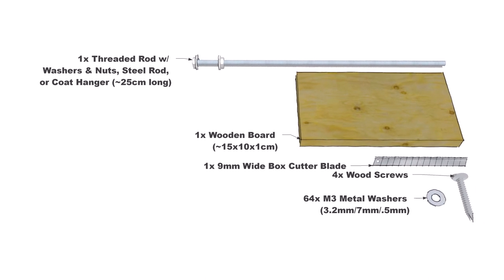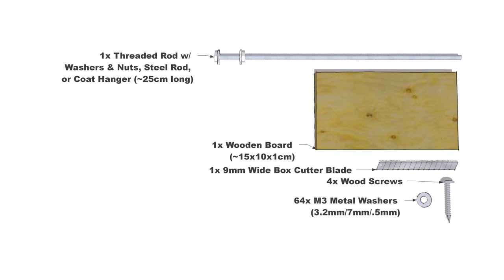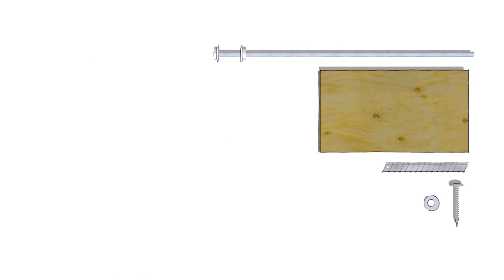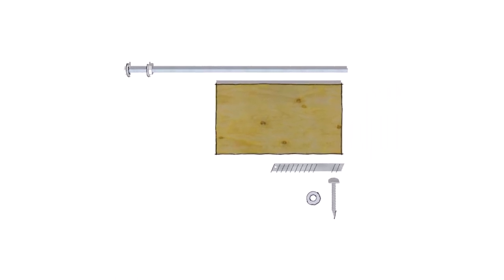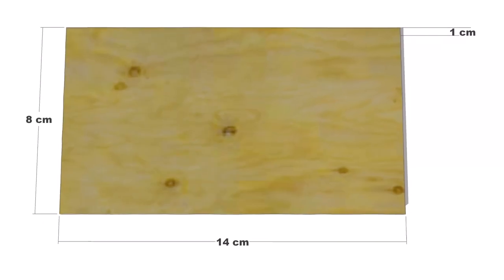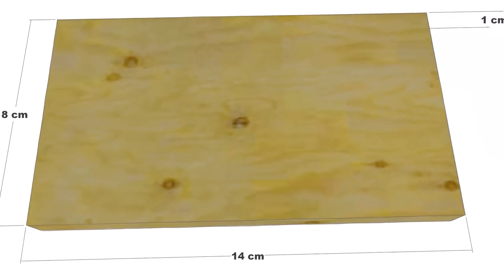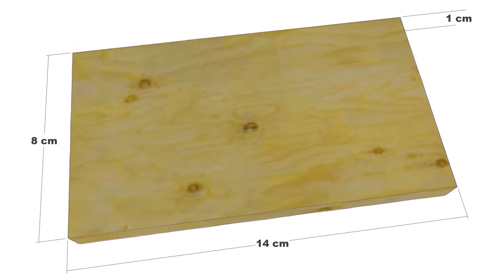A 9mm wide box cutter blade, four screws plus four for attaching the bottle slicer to a stable surface, and a threaded rod, steel rod, pipe, dowel, or coat hanger. Start by marking and drilling holes in a small board, approximately 15x10x1cm.